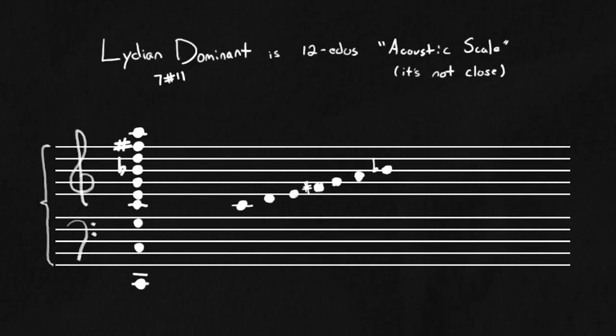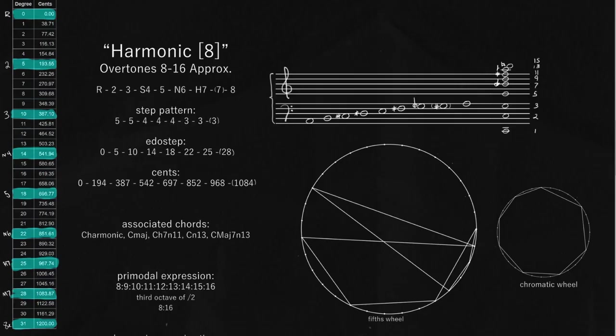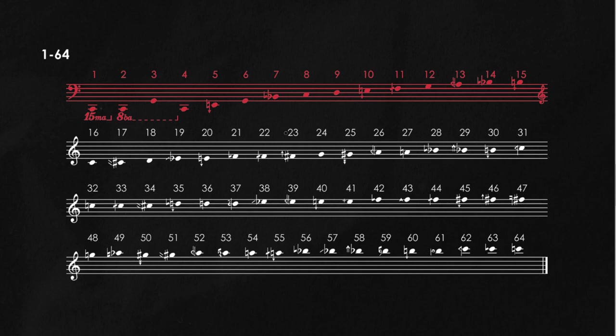Sometimes you'll hear this called the acoustic scale. 12 Equal has its own variation, although it is not anywhere near as close as 31 Equal. I also sometimes call this the ultra-harmonic chord or the ultra-harmonic scale. Basically, it's 31 Equal's best attempt at approximating the first 8 to 16 overtones.